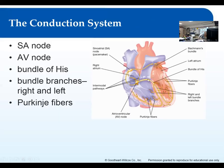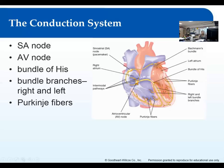It starts in the SA node and travels via internodal pathways down to the AV node — another little bundle of tissue. Then you have a very large bundle of nervous tissue that extends down towards the septum called the bundle of His. That's the large bundle that goes from the AV node down to the septum. Remember, the septum is what separates the right and left sides of the heart.